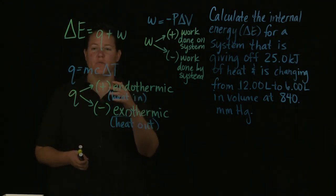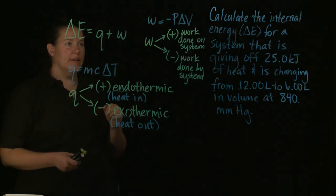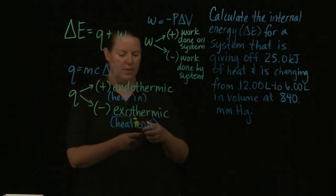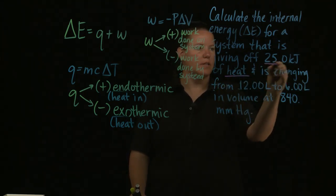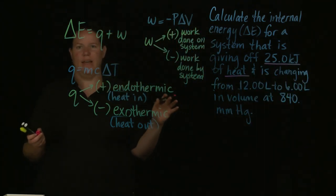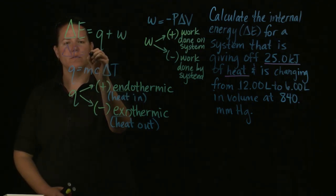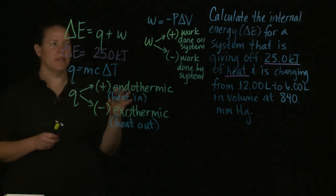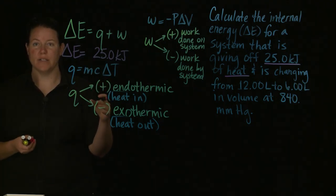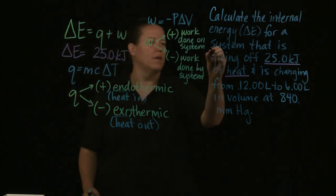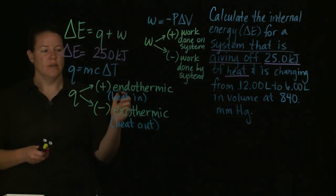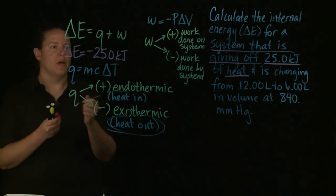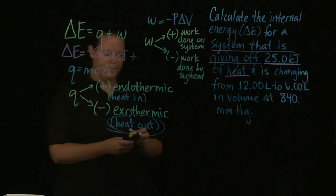In terms of what we need to do here, we need to figure out what my heat is, figure out what my work is, and solve this problem. In terms of the heat, notice that it says 25.0 kJ of heat—that's already in energy units. The only thing I have to decide is the sign convention: Is the heat positive or negative? Since the system is giving off 25 kilojoules of heat, that means it's heat out, which means it's exothermic. That means I put a minus in front of that. So Q = -25.0 kJ.